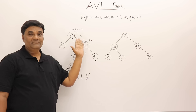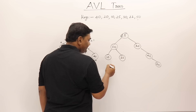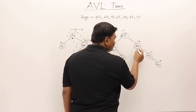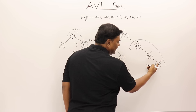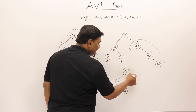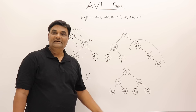Insert 50: comes as right child of 40. Node 25 becomes imbalanced with balance factor -2 — RR imbalance. Perform RR rotation: 25 and 20 with 10 and 22 stay, 40 becomes child with 30 on left and 50 on right. Now it is a perfectly balanced binary search tree — the AVL tree.